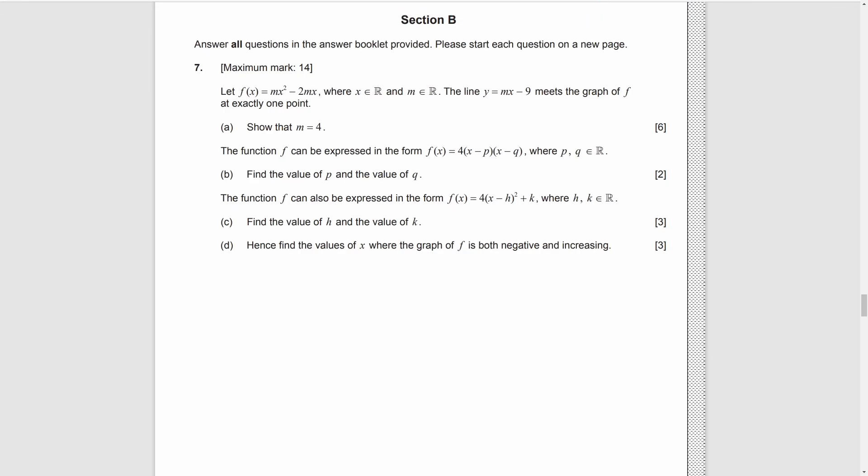Question 7. F(x) is this, and there is a straight line meets f at exactly one point. For part A, just like the previous question, when we see the word intersect or meet, we just set the equation to be the same. And we can get mx squared minus 3mx plus 9. They only meet at one point means that there is only one solution for this quadratic equation.